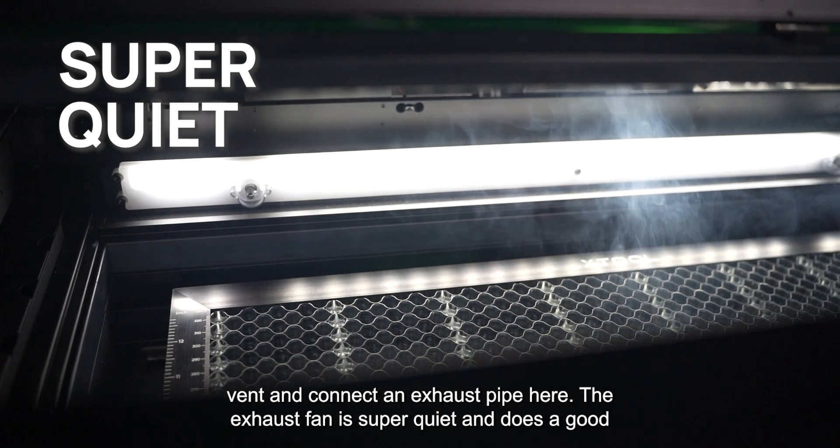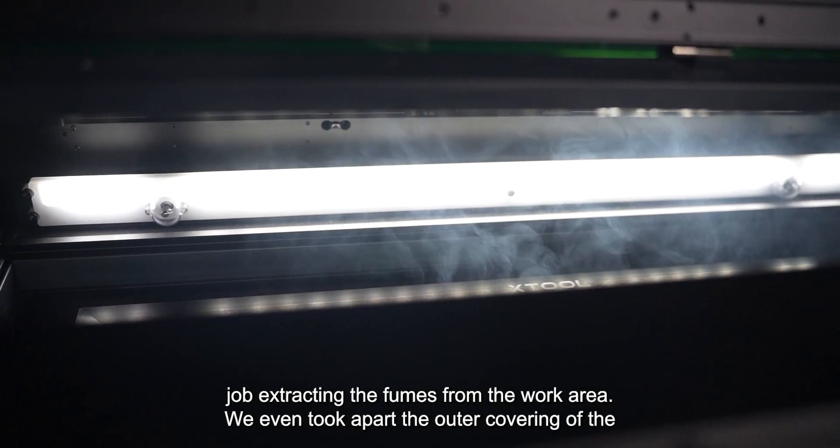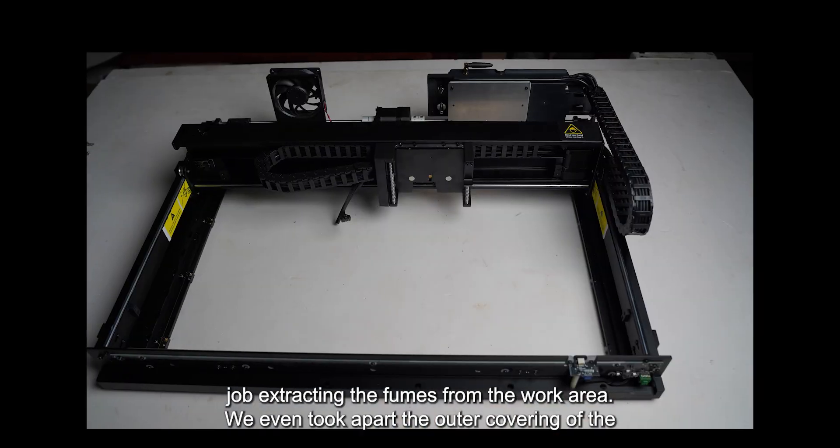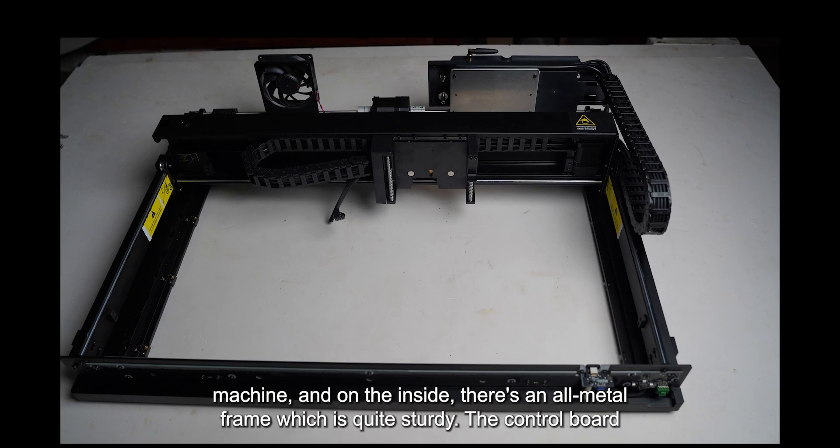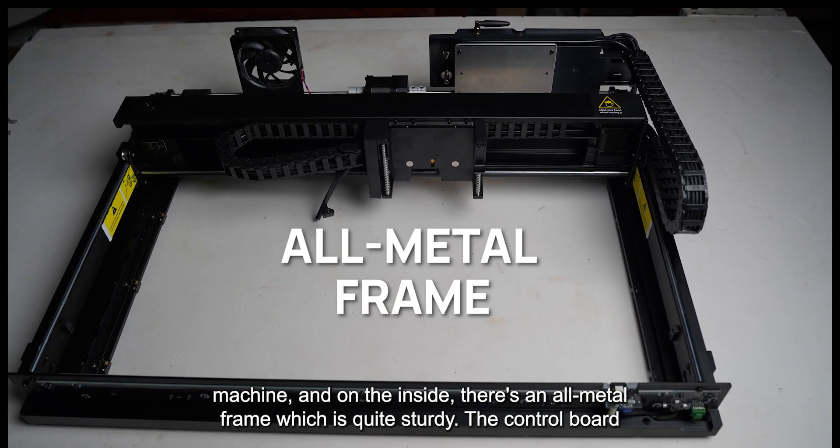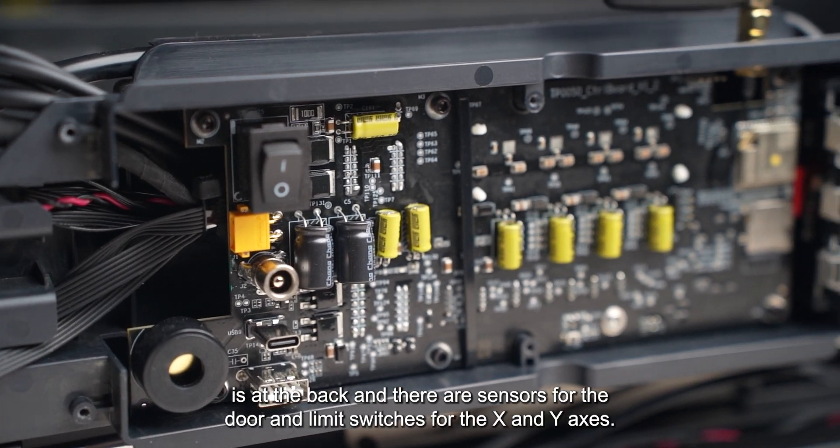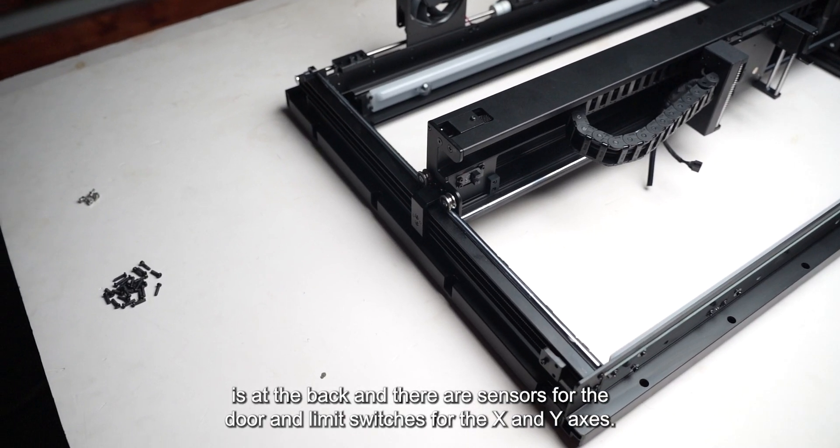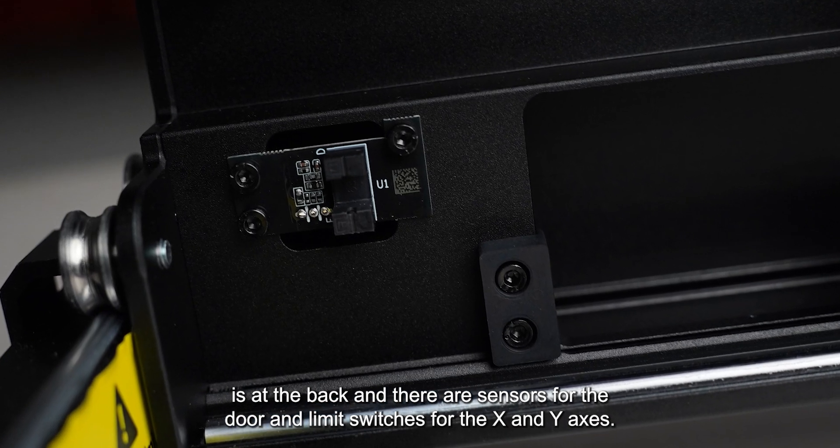The exhaust fan is super quiet and does a good job extracting the fumes from the work area. We even took about the outer covering of the machine and on the inside, there's an all metal frame which is quite sturdy. The control board is at the back and there are sensors for the door and limit switches for the X and Y axis.